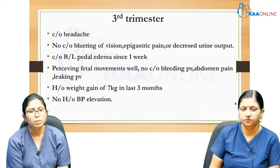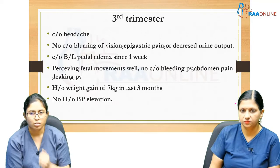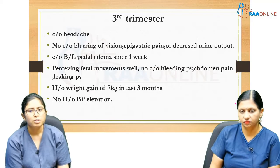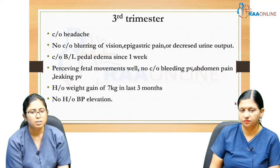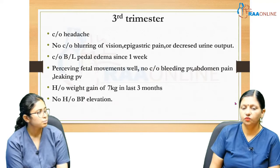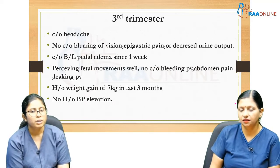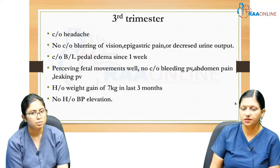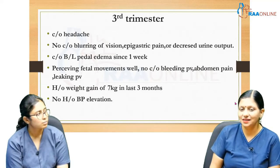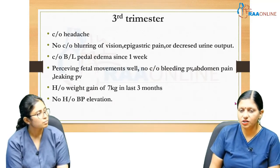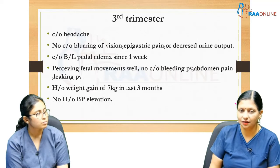Third trimester: she came with complaints of headache not associated with blurring of vision, epigastric pain, or decreased urine output. Bilateral pedal edema since one week, but she is perceiving fetal movements well. No complaint of bleeding PV, abdominal pain, or leaking PV. History of weight gain of 7 kg in the last 3 months. Normal weight gain is 0.5 kg per week; average total is 9 to 12 kg — approximately 3 kg each in the first and second trimesters and 6 kg in the third.